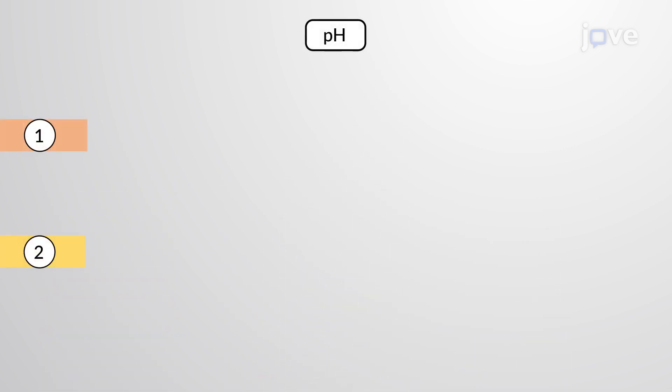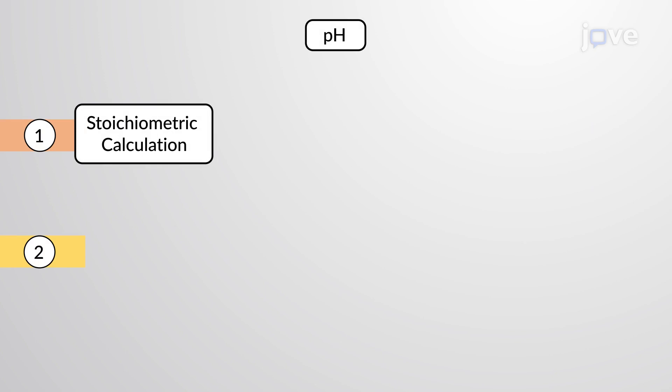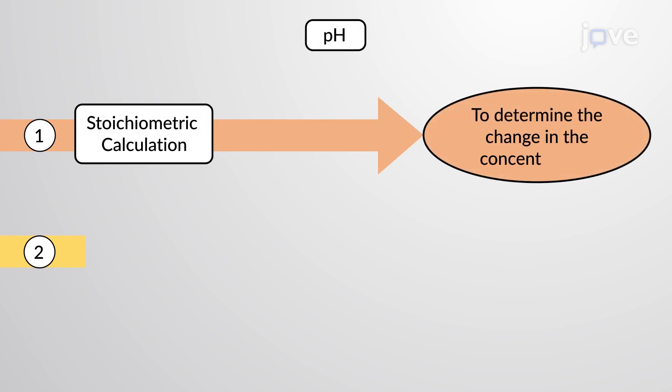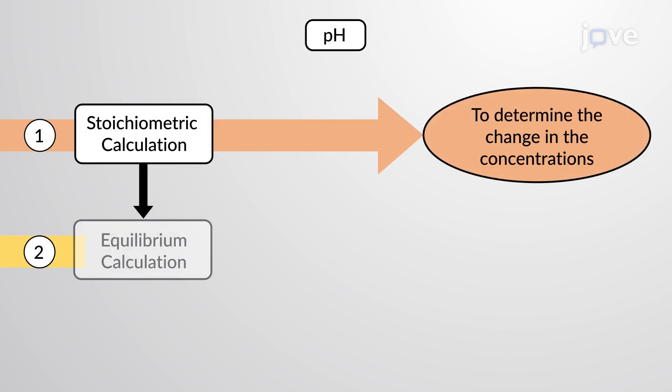This pH change is calculated in two distinct steps. First, a stoichiometric calculation is used to determine the change in the concentrations.